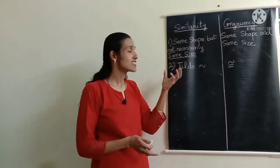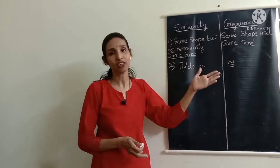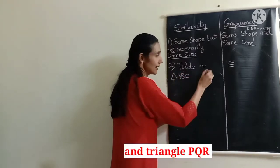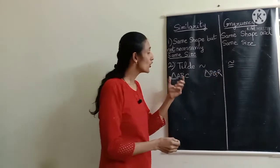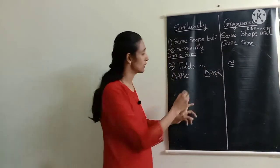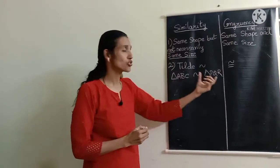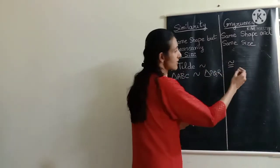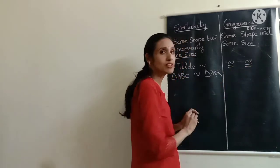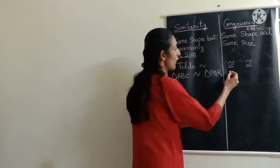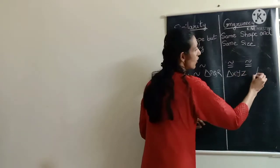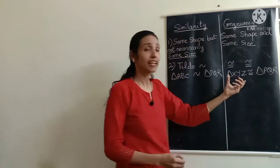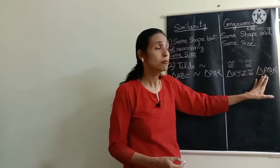The next point of difference is the symbol used to denote similarity and congruency. If triangle ABC is similar to another triangle, you denote it by the tilde symbol (~). Whereas for congruent figures you use the tilde followed by an equal sign below it (≅). So for example, triangle XYZ congruent to triangle PQR is written using this symbol, showing that triangle XYZ is congruent to triangle PQR.